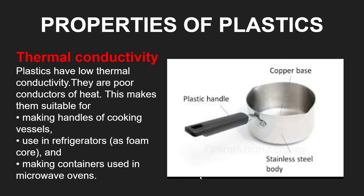Now let's come to the properties of plastics. In chemistry, every substance has physical and chemical properties. Here we talk about thermal conductivity. Plastic is always known as a bad conductor of heat — it has low thermal conductivity, which is why we call it a bad or poor conductor of heat.